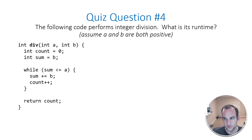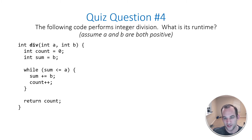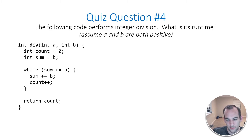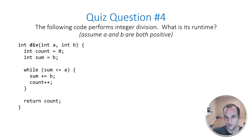Okay, so question number four. The following code performs integer division — what is its runtime? Assume A and B are both positive. So this is one of the tricky ones because, as you can see, there's no actual division mathematical operation happening here. This is just another way to actually do division. There are two inputs. I don't care about the assignment variables. So here's our loop: while the sum is less than or equal to A, sum plus equals B, and we're incrementing the count variable. Then we're returning count. What I'd suggest is to jot some hard-coded numbers down so we can see what this is.